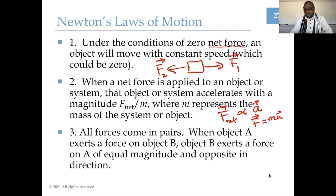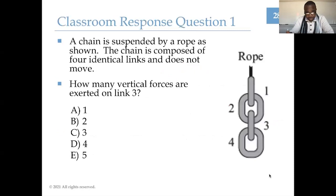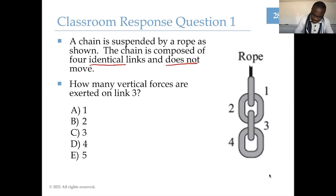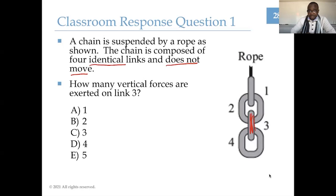Anytime I read a physics problem, I try to underline key words. Here, the problem tells us the links are identical and the chain does not move — both are important. Link three has mass, which means there's a gravitational pull on it pointing toward the center of the Earth, which we'll write as W_E3 — the force that the Earth is exerting on link three, pointing downward. We also see that link two and link three are in contact, and anytime two objects are in contact there is a normal force, so link two pushes up on link three — we write this as N_23, pointing up.